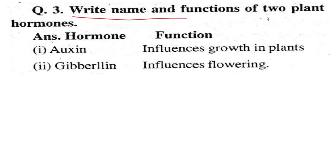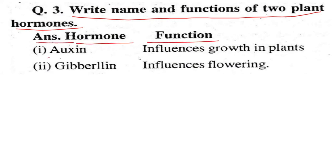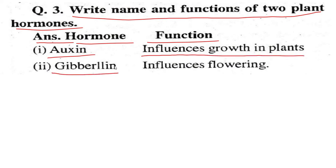Question: Write the name and function of two plant hormones. Answer: Auxin — influences growth in plants. Gibberellin — influences flowering.